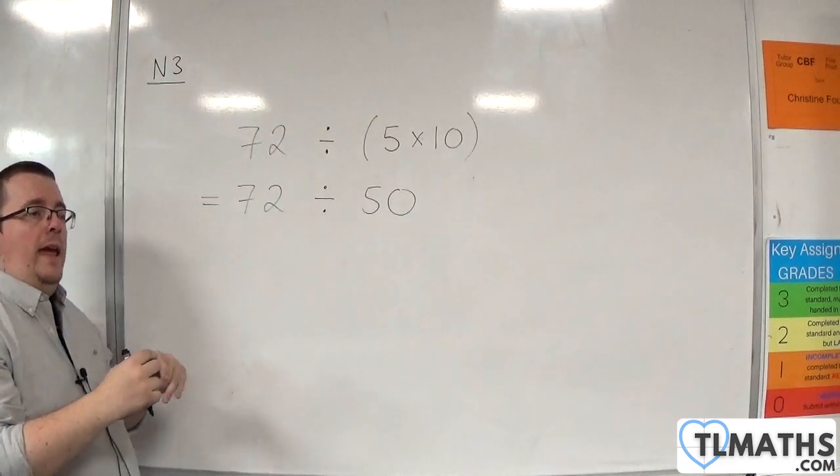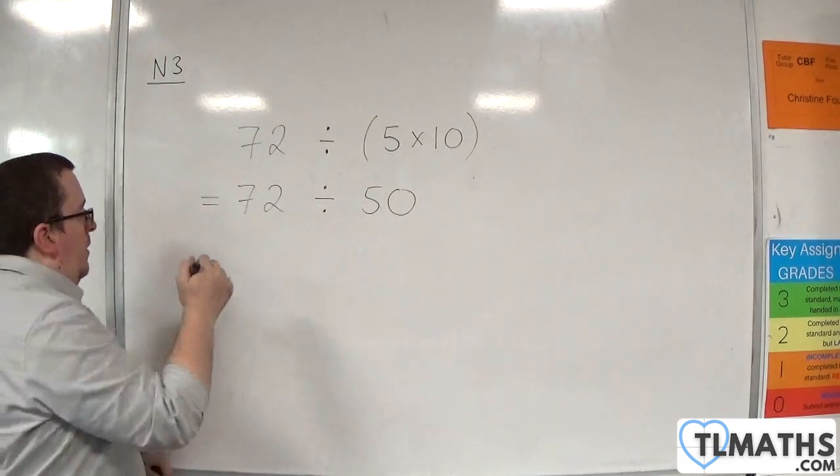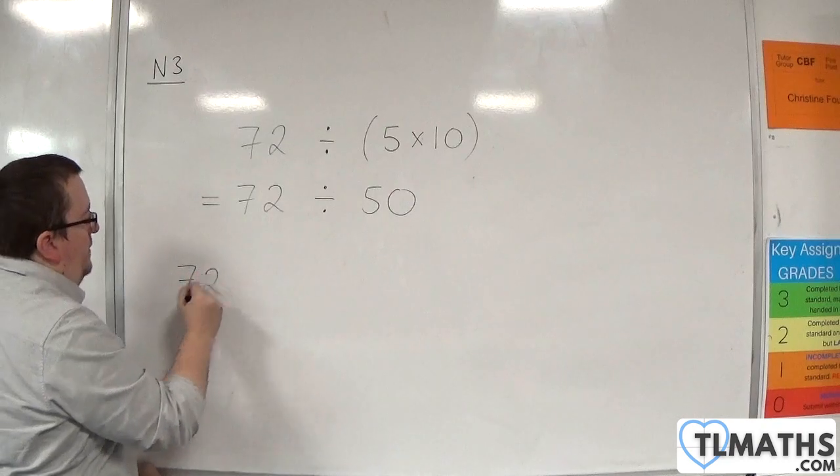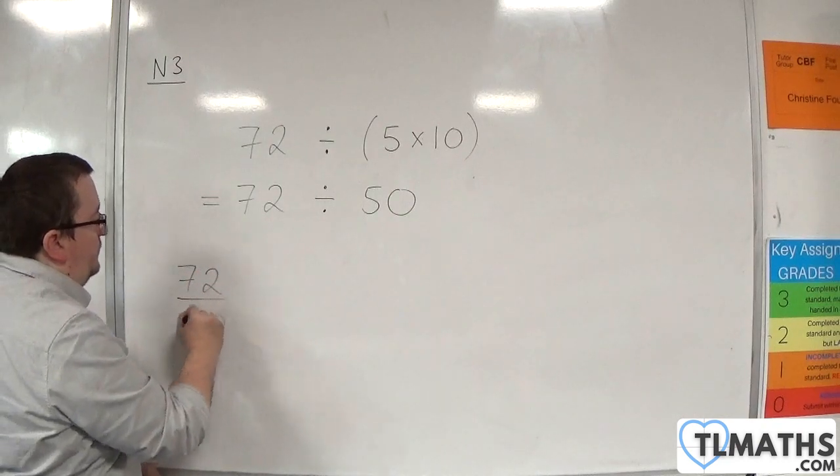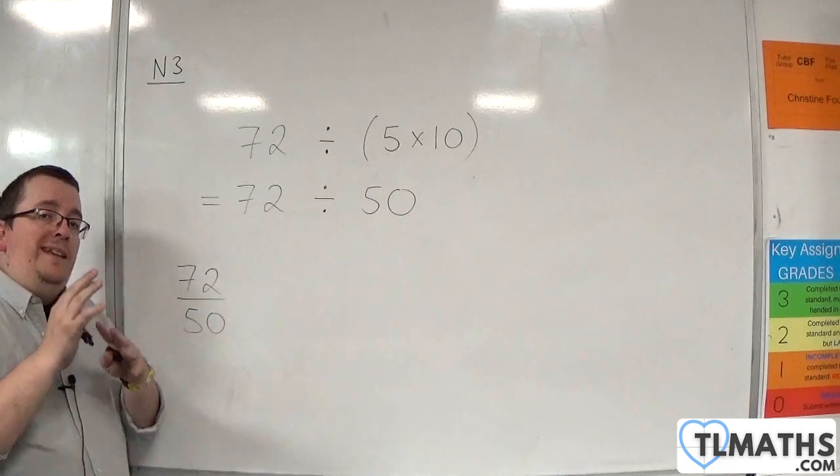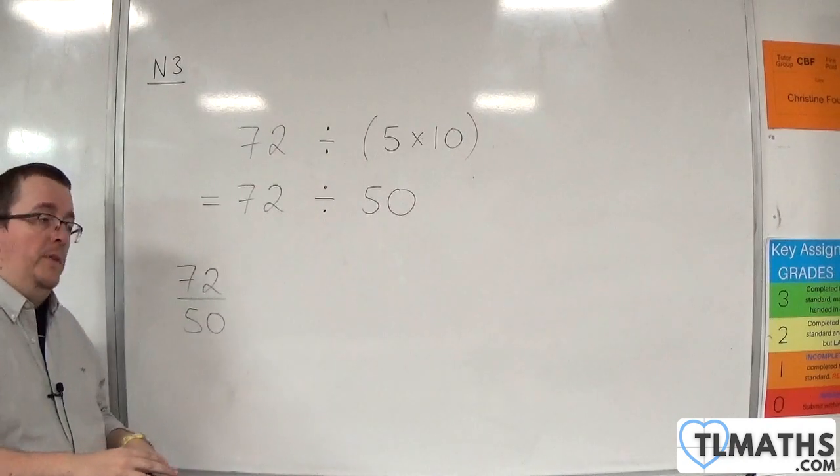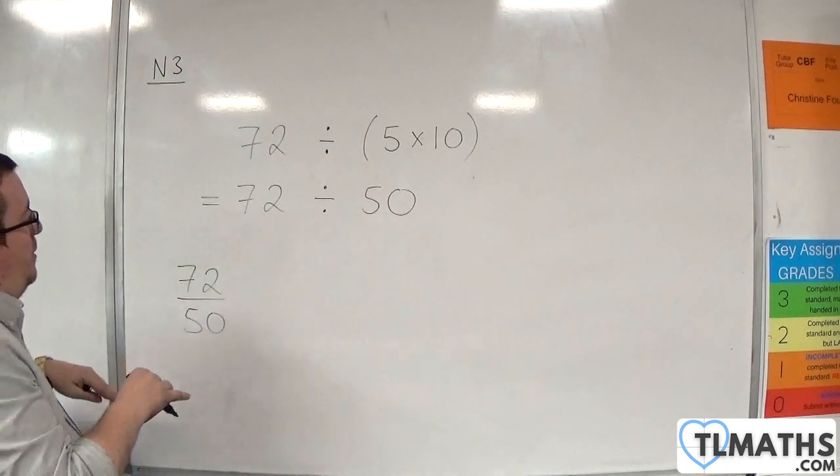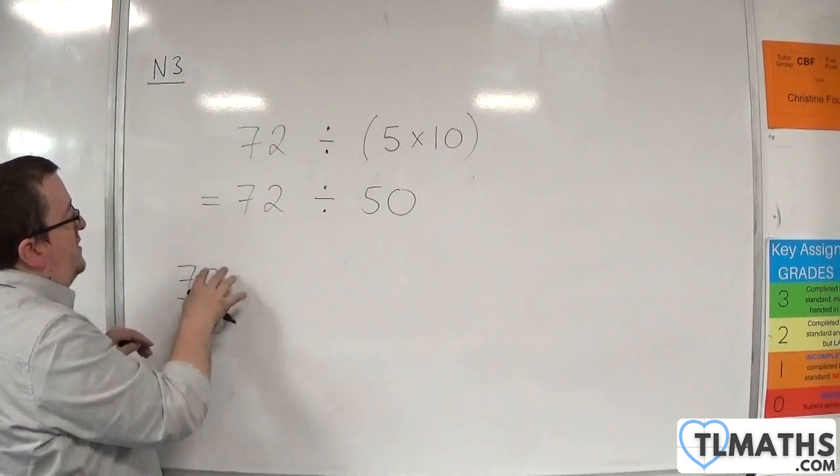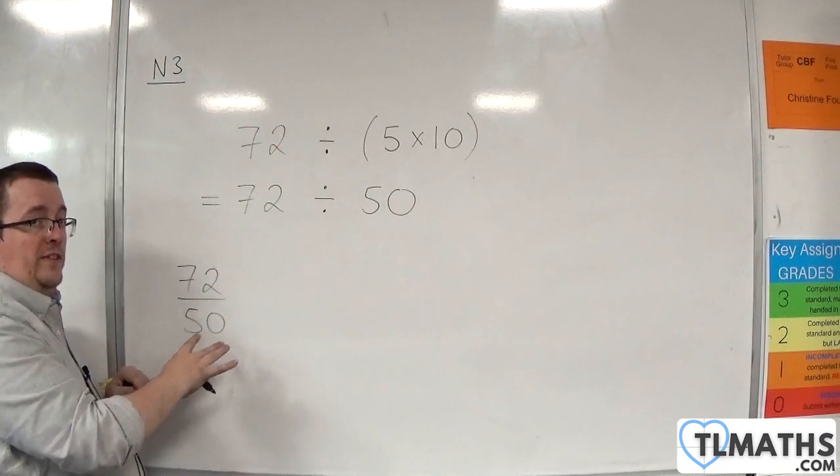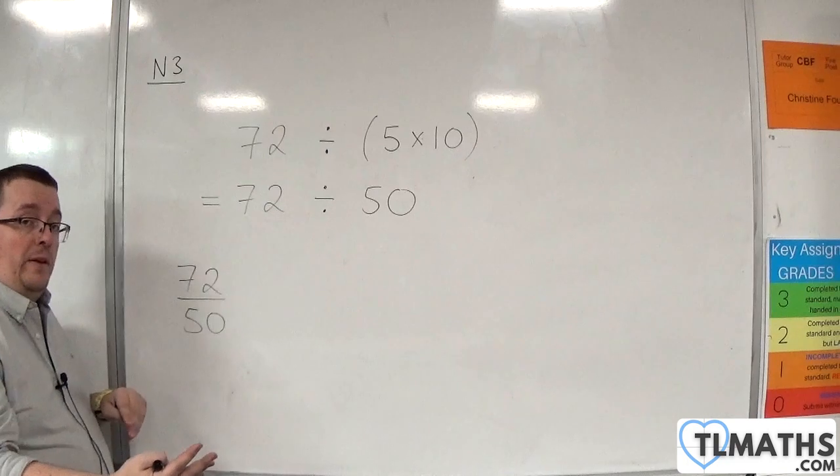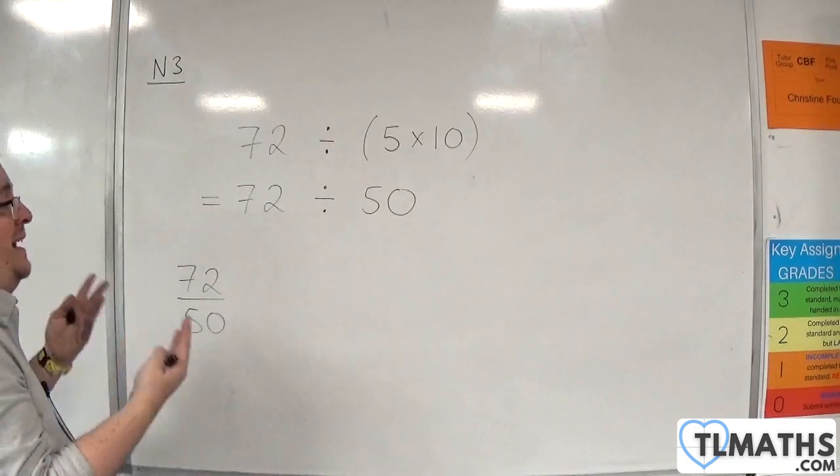So, essentially, what I'm doing is I am looking at a fraction of 72 over 50. And whatever I do to the numerator, I need to do to the denominator. So, I'm going to divide top and bottom by 10, and look at 7.2 over 5 instead. Because that's exactly the same fraction, and so it must have exactly the same value.